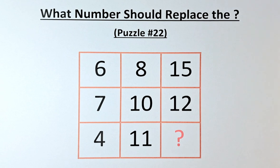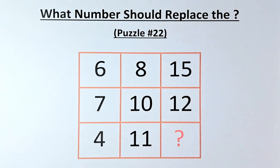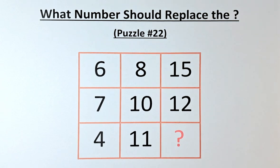The numbers in the puzzle are as follows. In the first row, we have 6, 8, and 15. In the second row, we have 7, 10, and 12. And in the final third row, we have 4, 11, and the question mark.